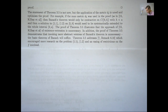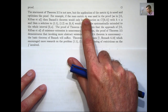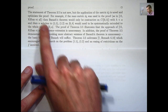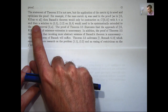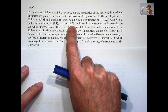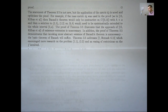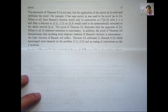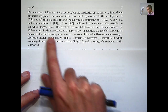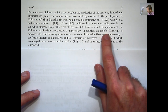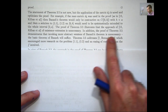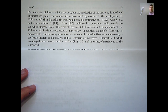A few comments: the statement of theorem 3.5 is not new, but the application of this D_β metric is new and does optimize the proof. For example, if we were using the maximum metric D_0, as in Kilbas et al.'s book, then Banach's theorem would only be contractive on a smaller set where h < a, giving existence and uniqueness only on a smaller interval requiring systematic extension. The proof I've shown illustrates that the approach of Kilbas et al. of existence followed by extension is unnecessary. In addition, the proof demonstrates that invoking more abstract versions of Banach's theorem is unnecessary — the basic theorem of Stefan Banach suffices. Theorem 3.5 also addresses one of Diethelm's remarks encouraging more research and an easing of restrictions on f.